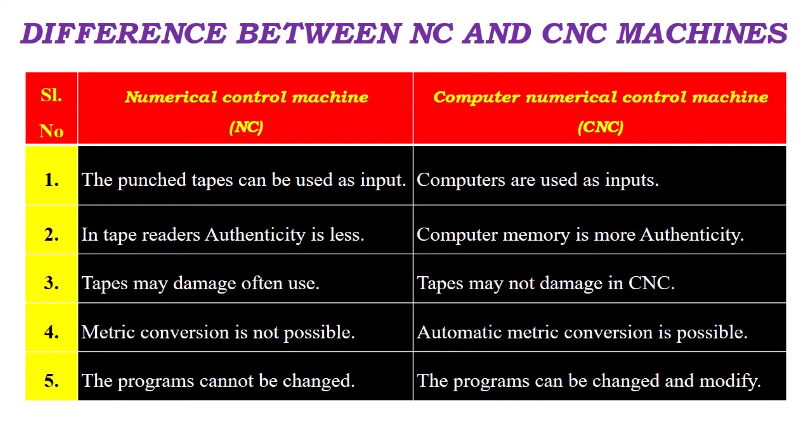Three: in NC machines, tapes may often get damaged; in CNC machines, tapes may not get damaged. Four: in NC machines, metric conversion is not possible; in CNC machines, automatic metric conversion is possible. Five: in NC machines, the programs cannot be changed; in CNC machines, the programs can be changed and modified.